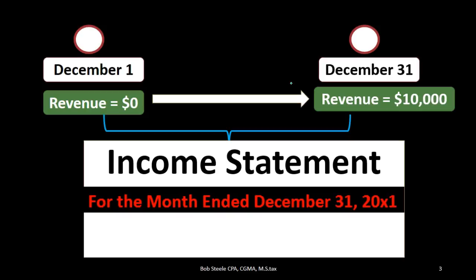Usually the income statement is represented by saying it's going to be for the month ended — in this case December 31st. That phrasing can be a little deceiving because we see the end point, December 31st, but we don't see the beginning point — we don't see December 1st. We have to assume that 'month ended' means it began at the beginning of the month, which is December 1st through December 31st.